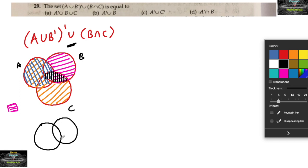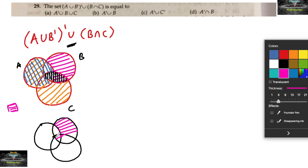Which gives us the answer. Let me draw it separately. So this is your answer — we can mark it out with sets A, B, C. This is your final result for the question.